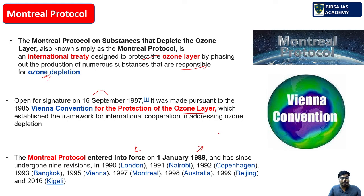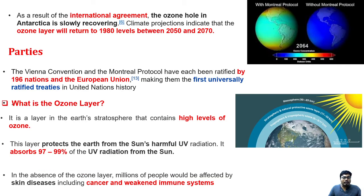The Montreal Protocol came into force on 1 January 1989. Since then there have been many revisions, starting in 1990 in London, with the latest in 2016 in Kigali, which is Uganda's capital. As a result of this international agreement, the ozone hole in the ozone layer is expected to return to 1980 levels between 2050 and 2070.